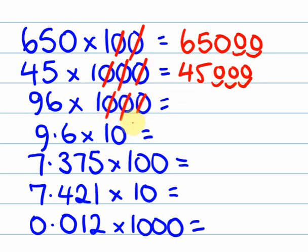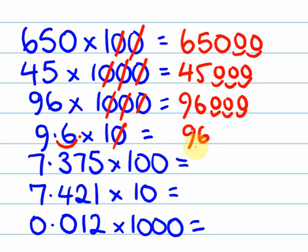This one, we have one, two, three decimal places. So the decimal place is going to have to jump three times. One, two, three. This one, we've got one zero. So we're going to have to move the decimal place one time. So 9.6, I'm going to have to move it once. So the decimal place is going to end up here. My answer is going to be 96.